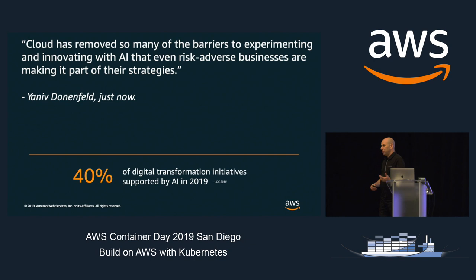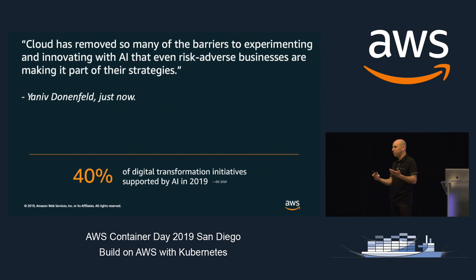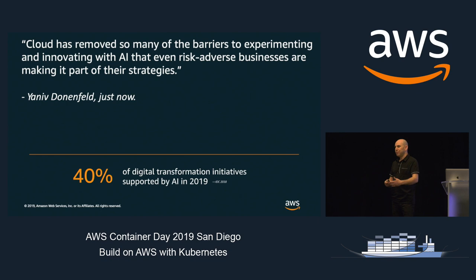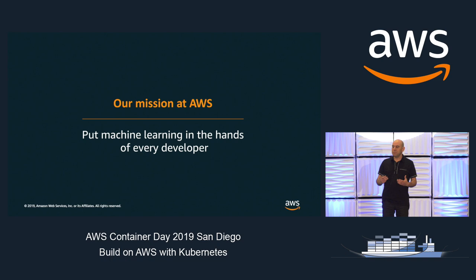We've seen a lot of machine learning hype over the last couple of years. The cloud giving developers scalable infrastructure to run ML workloads with an API call, as well as the advancement of ML frameworks and pipelines, have made it super easy for every company to start doing machine learning. Our mission at Amazon, put simply, is to put machine learning in the hands of every developer and data scientist.